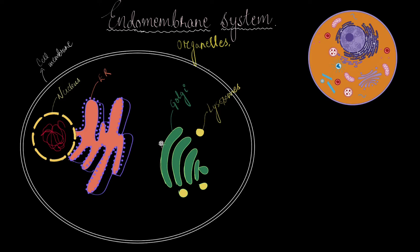You should know that the cell membrane, which is not typically inside the cell but makes up the cell boundary, is also a part of the endomembrane system. Apart from the cell membrane, the nuclear membrane is also considered part of the endomembrane system. Focusing on the organelles, we have the endoplasmic reticulum, the Golgi apparatus, the lysosomes, and the vacuoles.